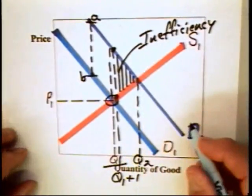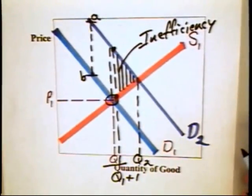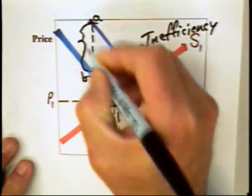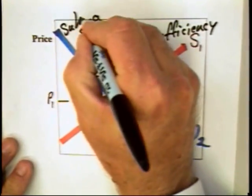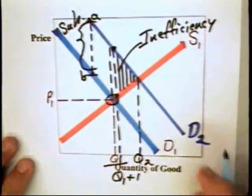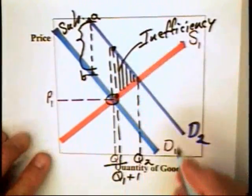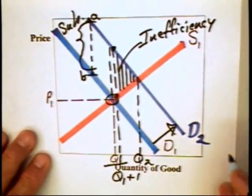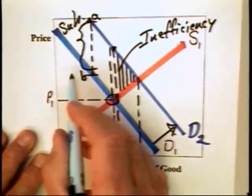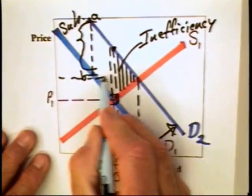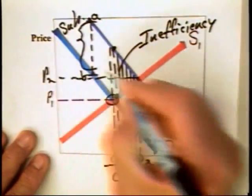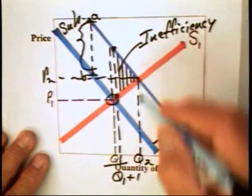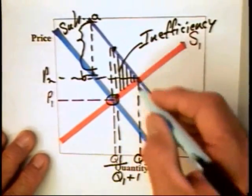This market inefficiency can be corrected by simply providing consumers with a subsidy equal to this vertical distance. If they are provided with a subsidy, then their demand will go up and the price of the good will go up. But more importantly, you will capture all of these additional benefits in that triangular area.